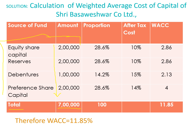The next task is to find out the proportion — proportion means percentage, at what percentage a particular component of capital will exist in the total capital structure. To calculate this, for rupees 7 lakh of total capital there is 2 lakh of equity share capital, so for rupees 100, you multiply 2 lakh by 100 and divide by 7 lakh, and the answer comes to 28.6%.